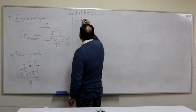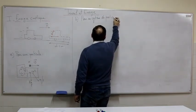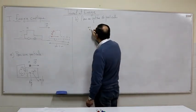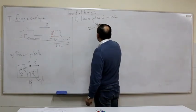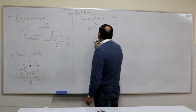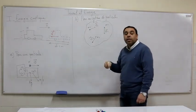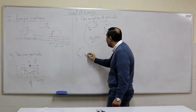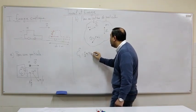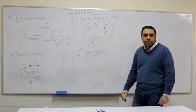Now what about a system of particles? A system of particles is made of several particles having masses m1, m2, m3, moving at velocities v1, v2, v3, etc. By definition, the kinetic energy of this system is equal to the sum of the kinetic energies of the particles: one half m1 v1 squared plus one half m2 v2 squared plus one half m3 v3 squared, and so on.